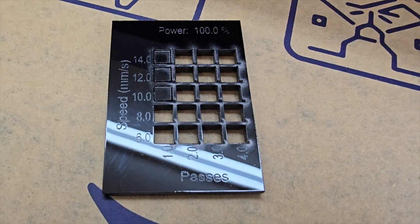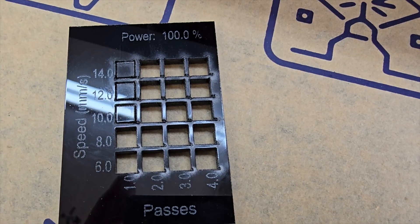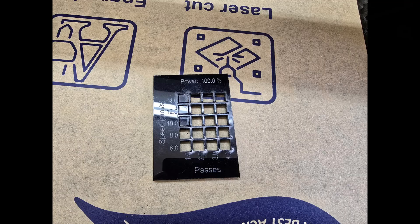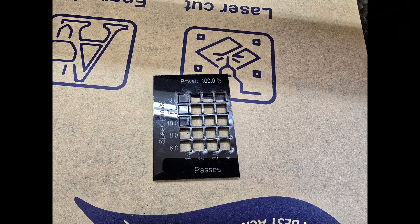I went ahead and started cutting this eighth inch, and I was able to cut this at eight millimeters a second in one pass, and at 14 millimeters a second it took two passes, and got some very smooth edges.